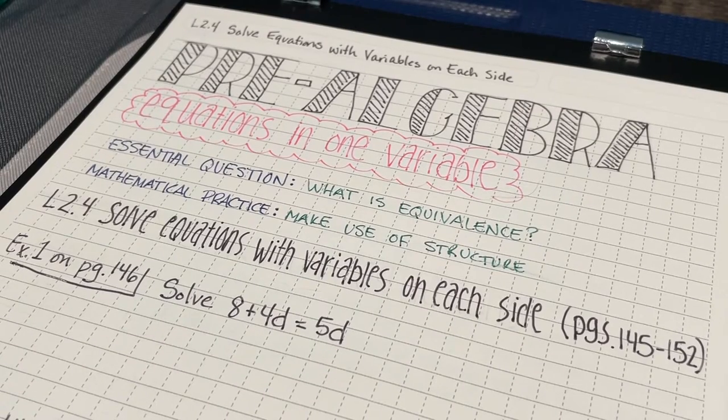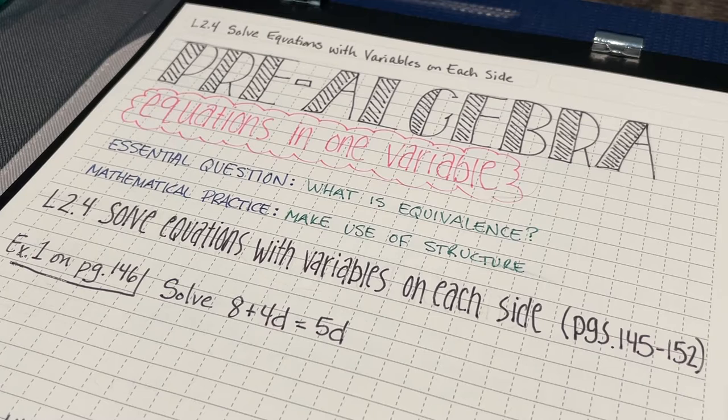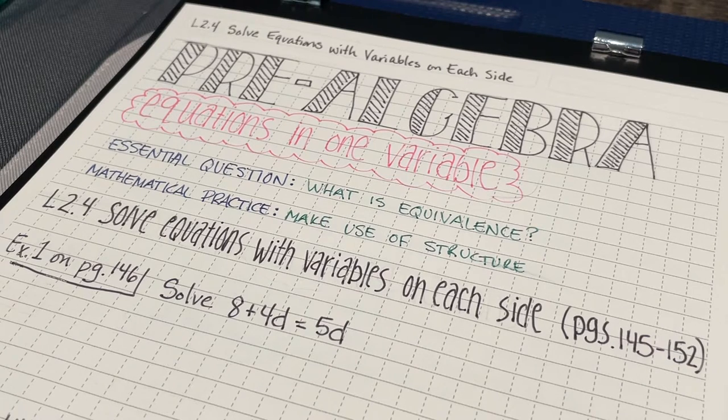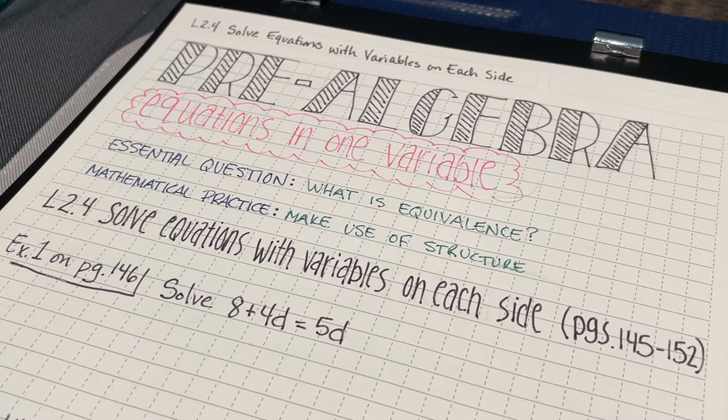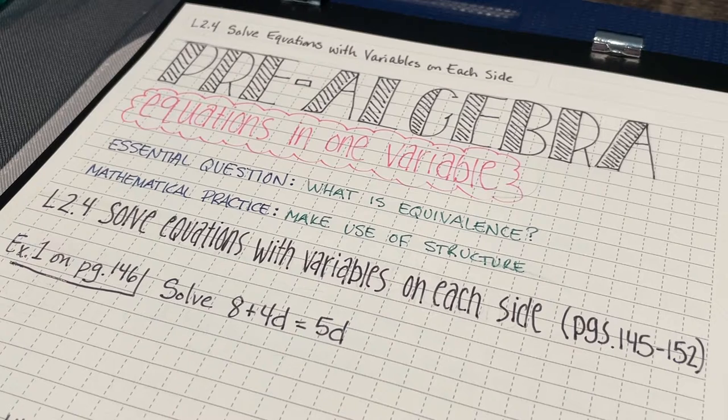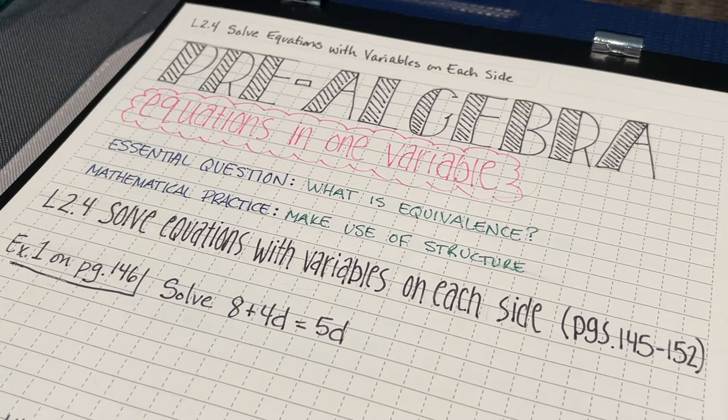Alright, so now here we have Lesson 2.4, Solve Equations with Variables on Both Sides. In these types of equations, we're going to have to do more than just our normal one- or two-step equations, we're going to have to do a little bit more, especially now that variables are going to be on both sides. So, stick around as we solve some of these problems.